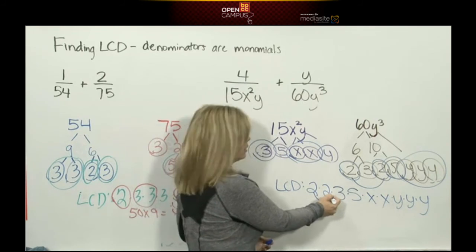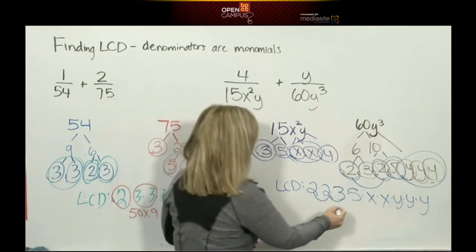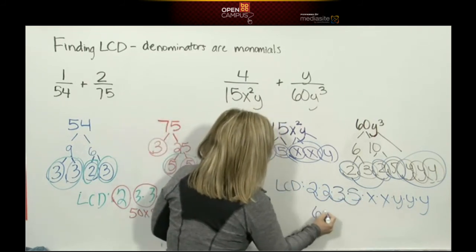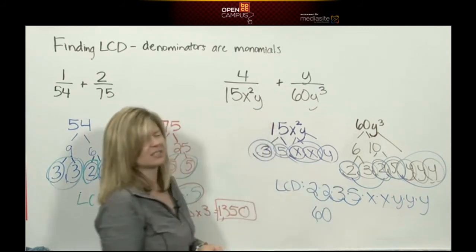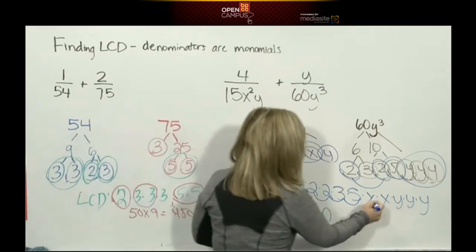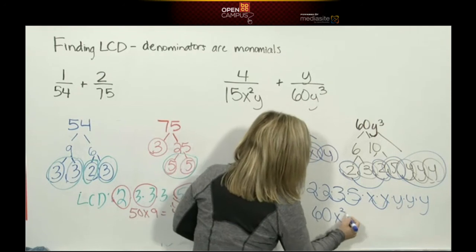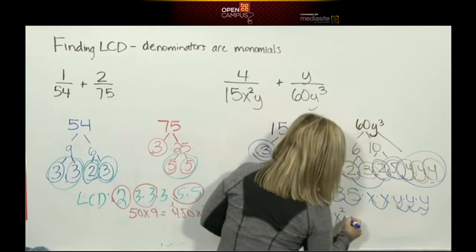All right, let's multiply together for the LCD. 2 times 2 is 4, 4 times 3 is 12, 12 times 5 is 60. Then I'll multiply my variables: x times x is x², y times y times y is y³. And that is your least common denominator: 60x²y³.